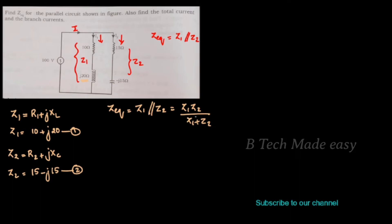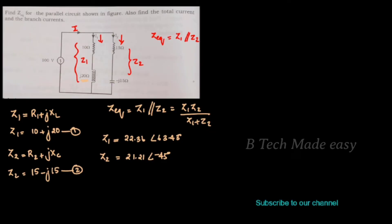Z1 in polar form is 22.36 angle 63.43 degrees. Z2 in polar form is 21.21 angle minus 45 degrees. Now let's substitute these polar values: the numerator is Z1 into Z2, which is 22.36 angle 63.45 degrees multiplied by 21.21 angle minus 45 degrees.